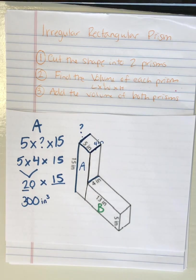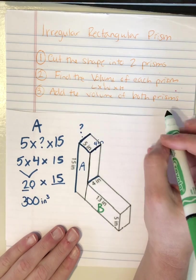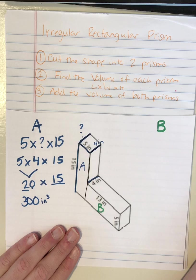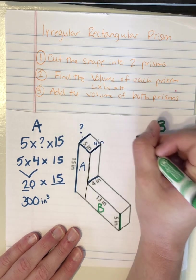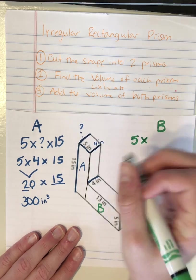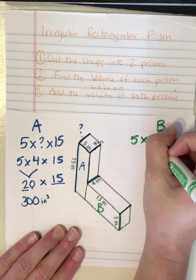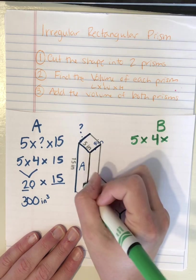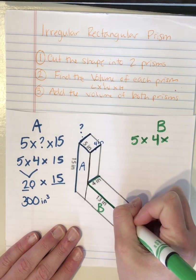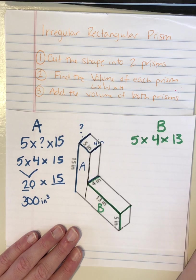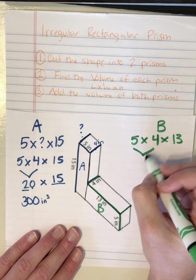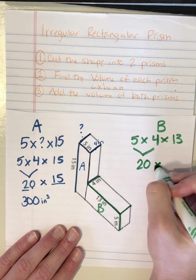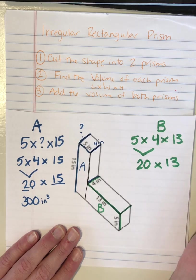We're still on step two because now I have to find the volume of shape B. So I see that this is 5. If this is 4 I know that this is 4. And then this length is 13. So I have all three of my values that I need to find the volume. Now I can just multiply. 5 times 4 is 20.